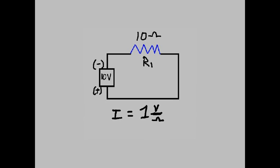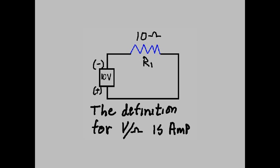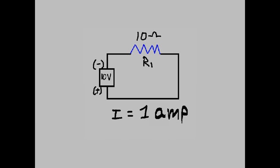10 over 10 is 1. I equals 1 times V over Ohm. The definition for V over Ohm is Amp. So I, current, equals 1 Amp.